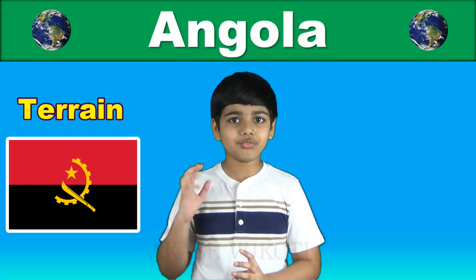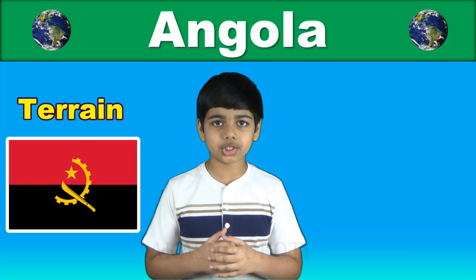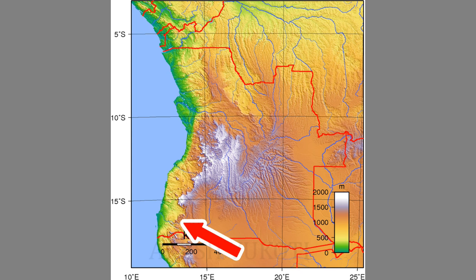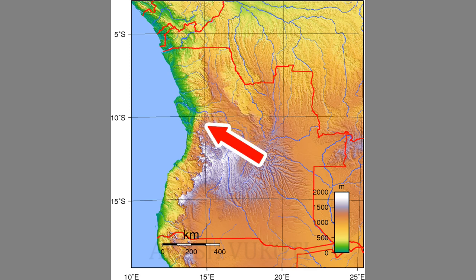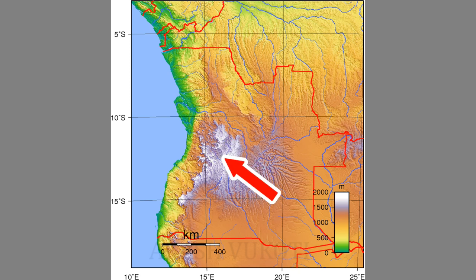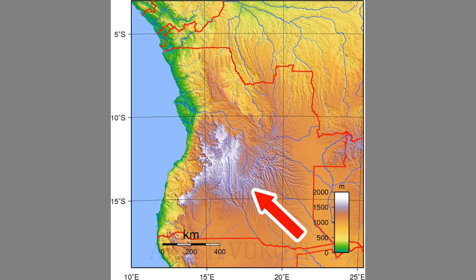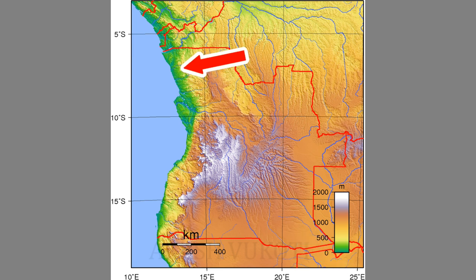Angola has four principal natural regions when it comes to terrain. One, the arid coastal plains stretching from Namibia all the way over to the capital, Luanda. Two, green hills and mountains rising inland from the coast into a great escarpment. Three, a large plateau called Planalto extending eastward and southeast from the escarpment. And four, rainforests in the north and in Kabinda.